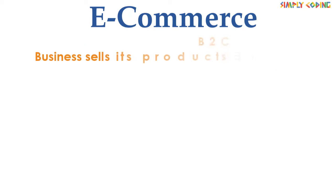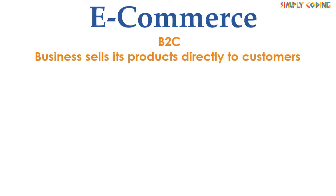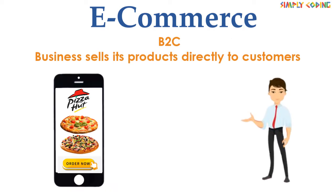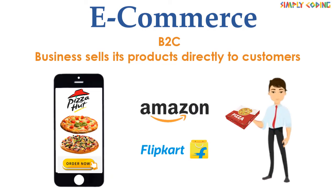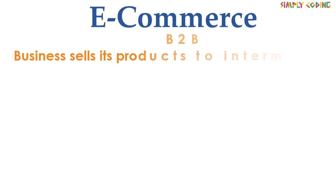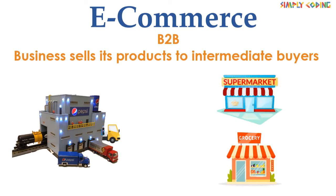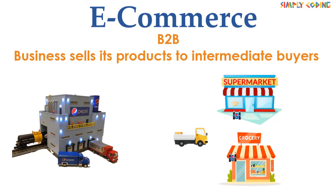Primarily e-commerce is of four types. First is B2C, where a business sells its products directly to a customer. A customer can view the product shown on the website and order the same — for example, Amazon or Flipkart. Next is the B2B model, where a business sells its products to an intermediate buyer who then sells the product to the final customer. For example, a company might sell its product to a wholesaler who will sell it to multiple retailers at some price markup.